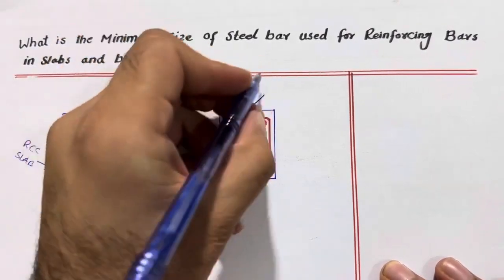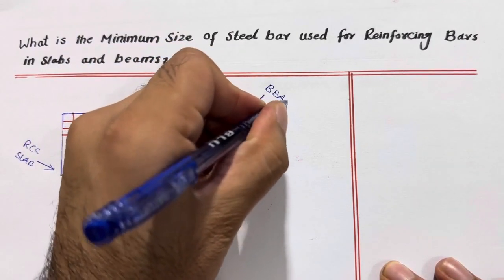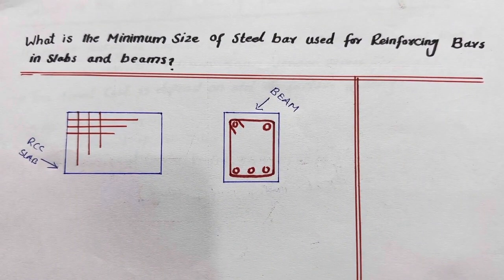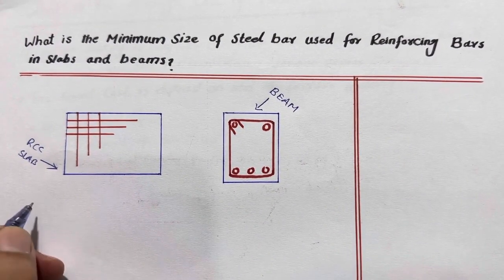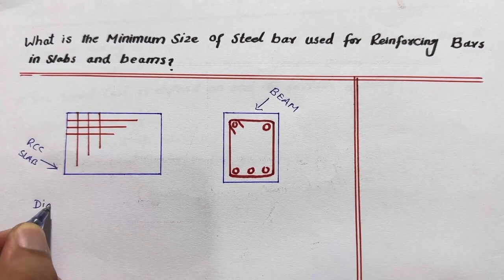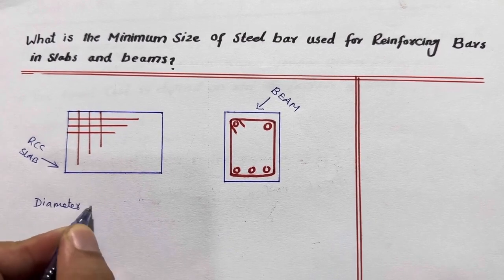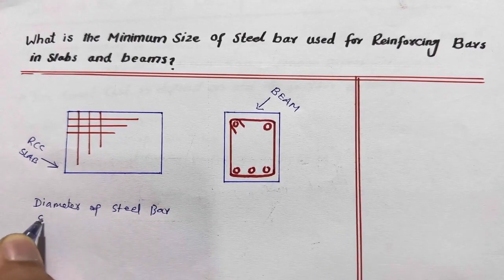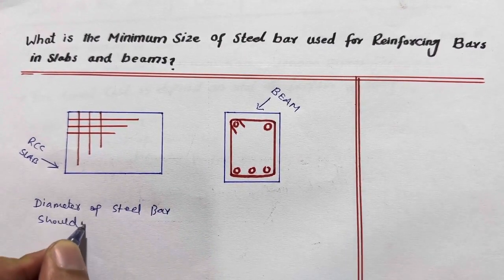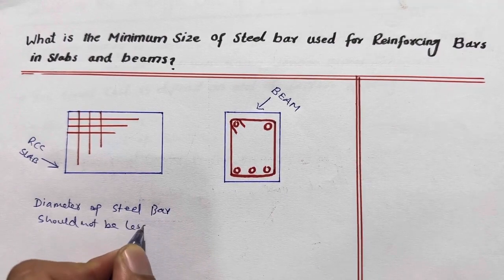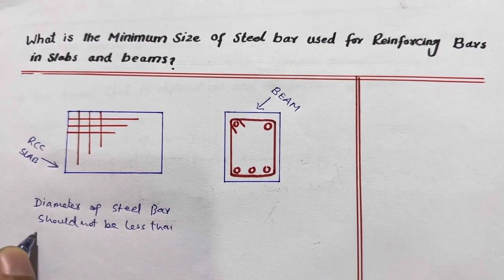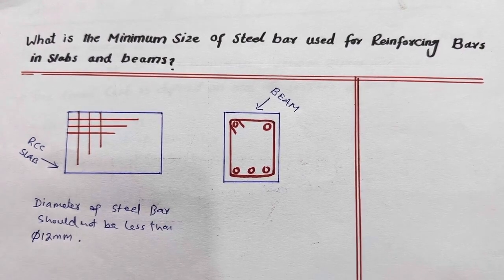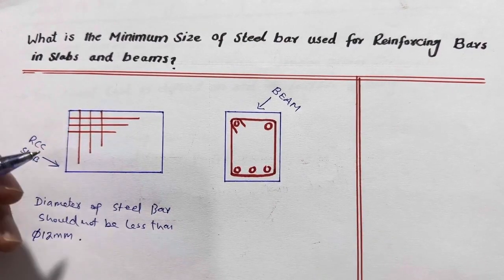As you can see, this is an RCC slab and this one is a beam. Remember, for a normal residential building, if it is an RCC slab or beam, the diameter of the bar should not be less than 12 millimeters. You can see this is the RCC slab — here we have main bars and distribution bars.